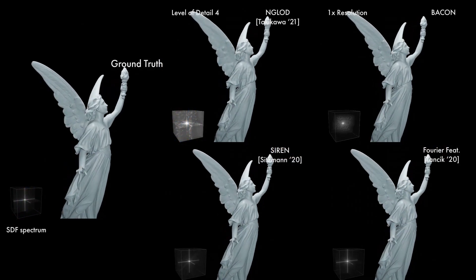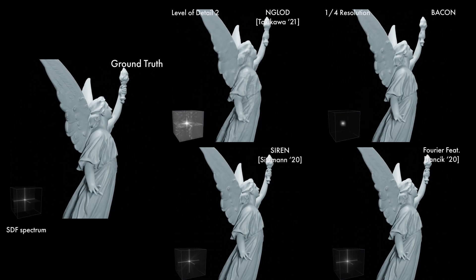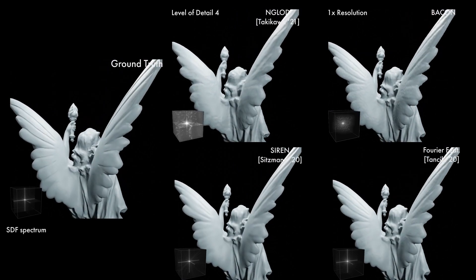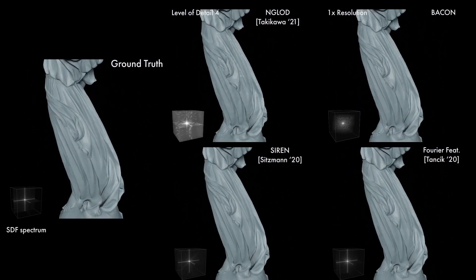Finally, we demonstrate BACON for representing 3D shapes via the signed distance function. For this task, we train BACON to fit a signed distance function estimated from a mesh. We compare to SIREN, Fourier features, and Neural Geometric Level of Detail. All methods achieve comparable performance at their highest detail outputs, and BACON achieves similar quality despite representing multiple scales simultaneously.